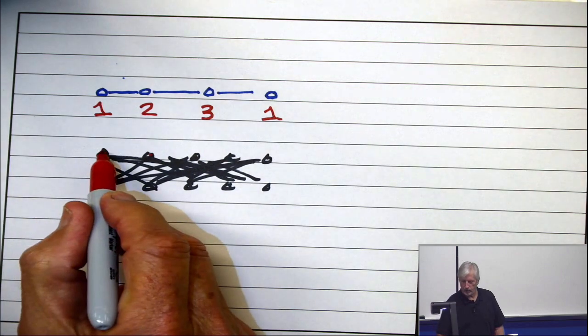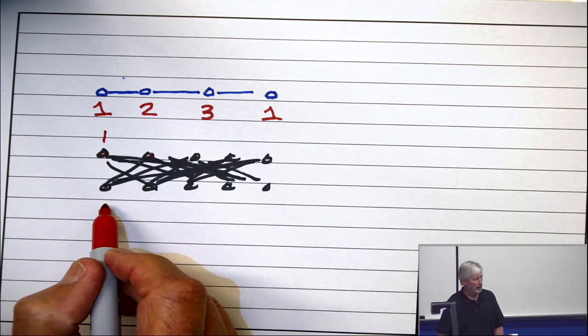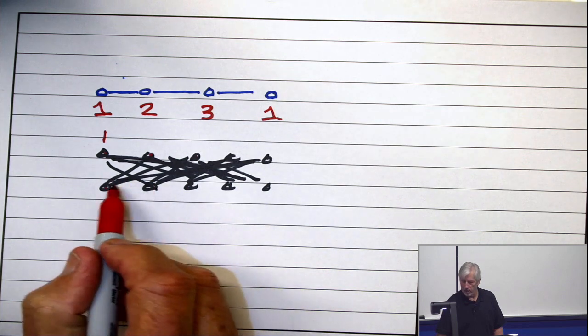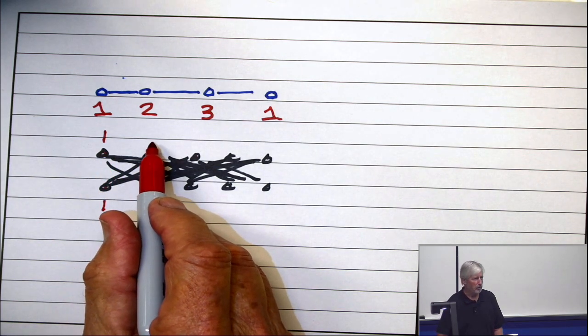Color this vertex first. Next, what would you color it? Color this vertex next. What would you color it? One. Because it's not adjacent to that one. Color this vertex next. What would you color it?